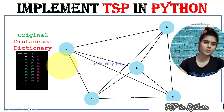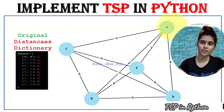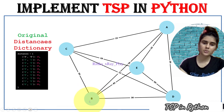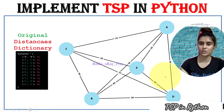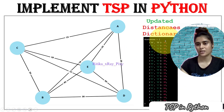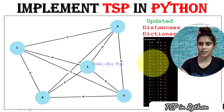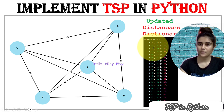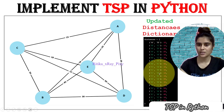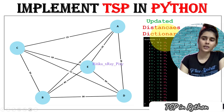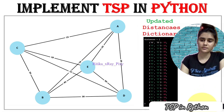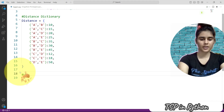Now we will update this distance dictionary. For example, the distance from A to B is 10, so the distance from B to A is also 10. We will do this for all the cities — for example, E to D is 50 then D to E is also 50. So you can see the updated distance dictionary: A to B is 10, B to A is also 10, A to C is 15, C to A is also 15, and so on.